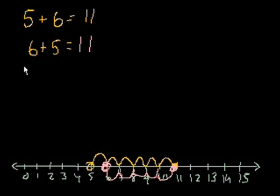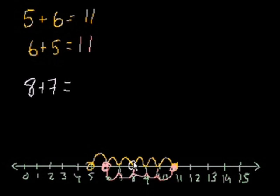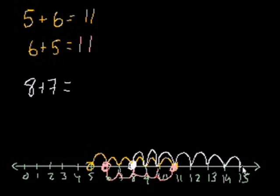What is 8 plus 7? Well, 8 is right here and we're going to add 7 to it: 1, 2, 3, 4, 5, 6, 7. And then we go to 15. So 8 plus 7 is 15.